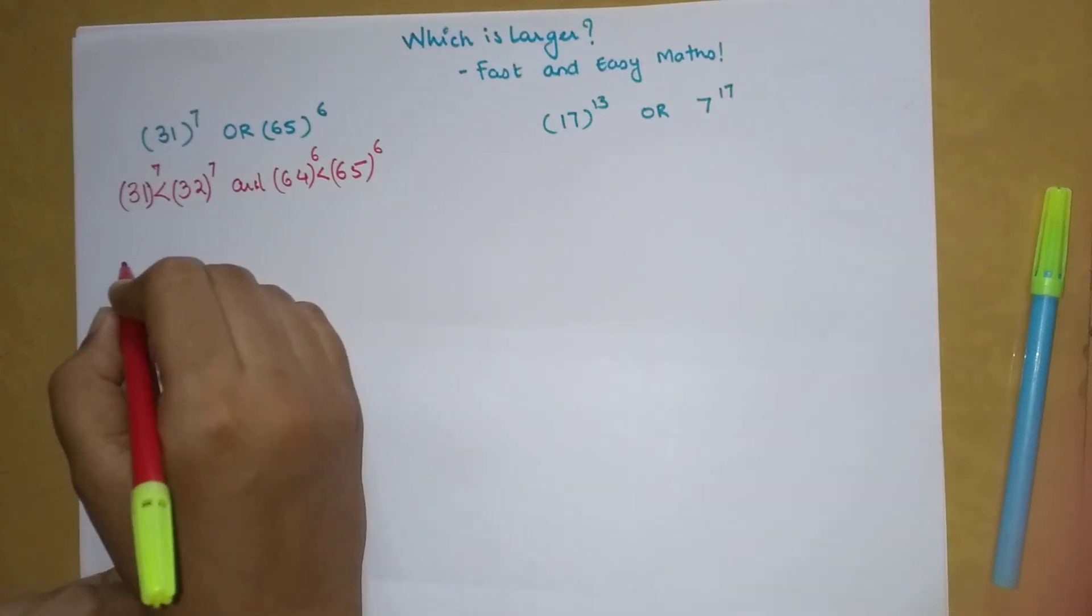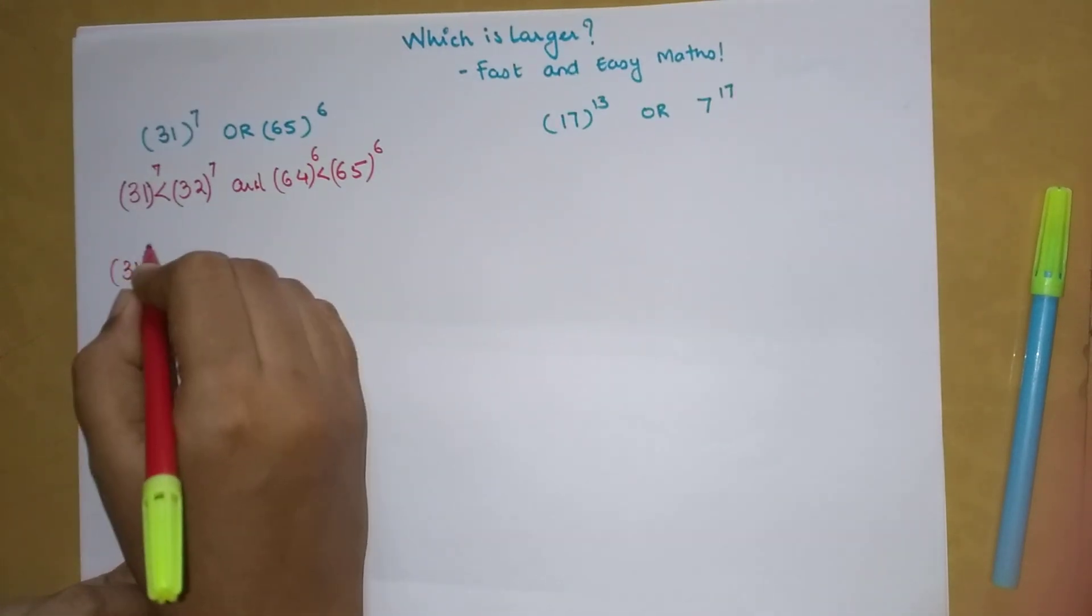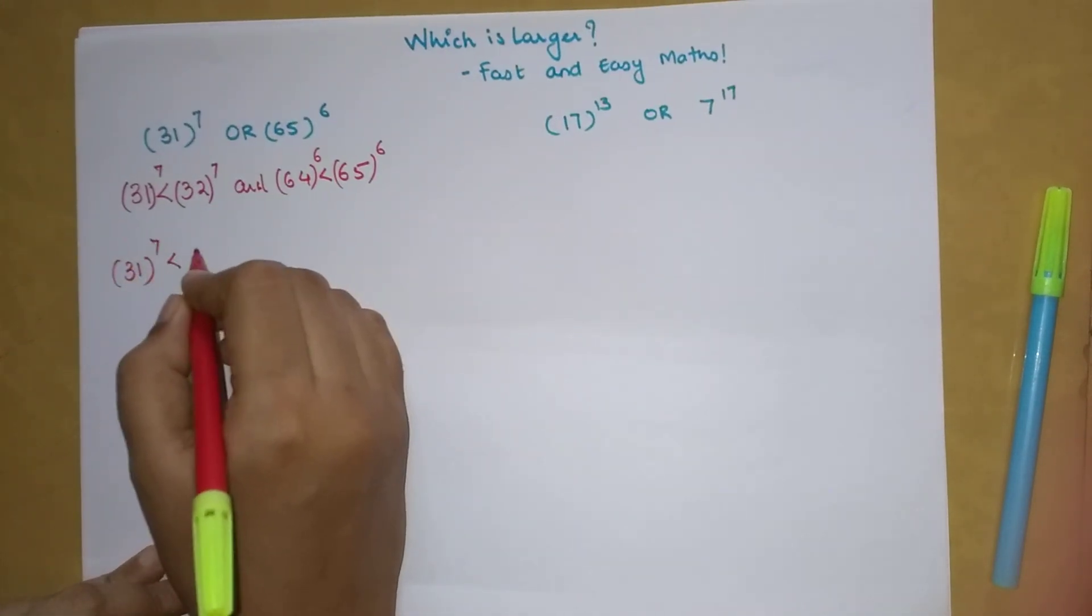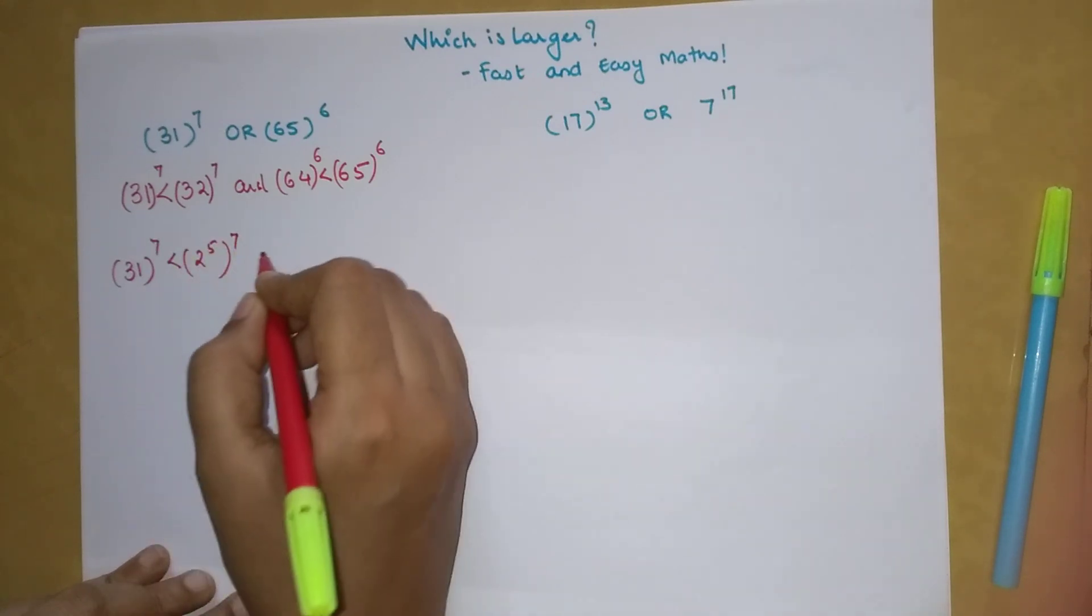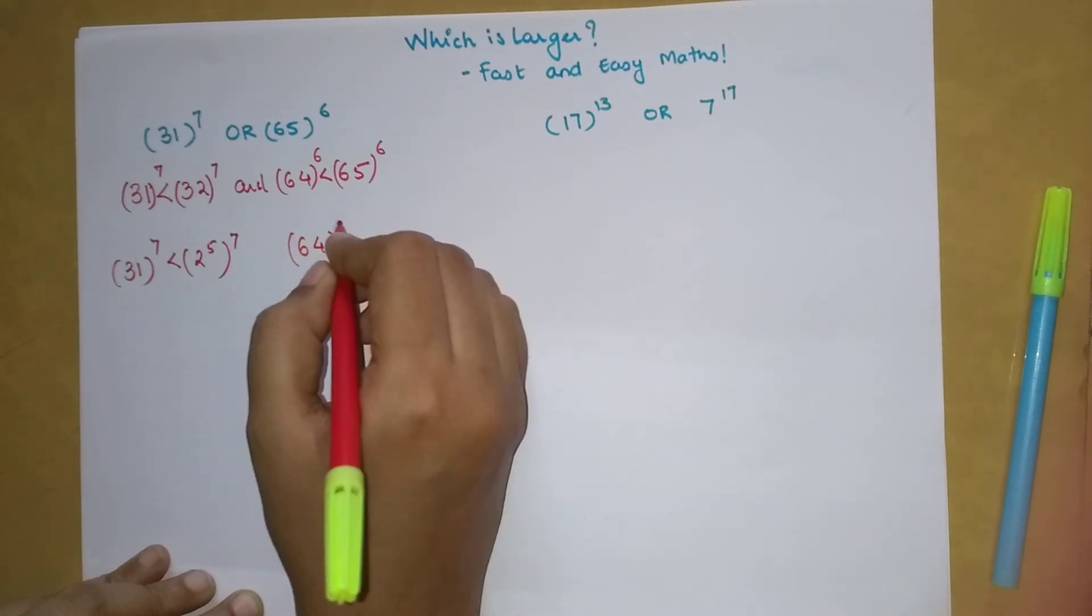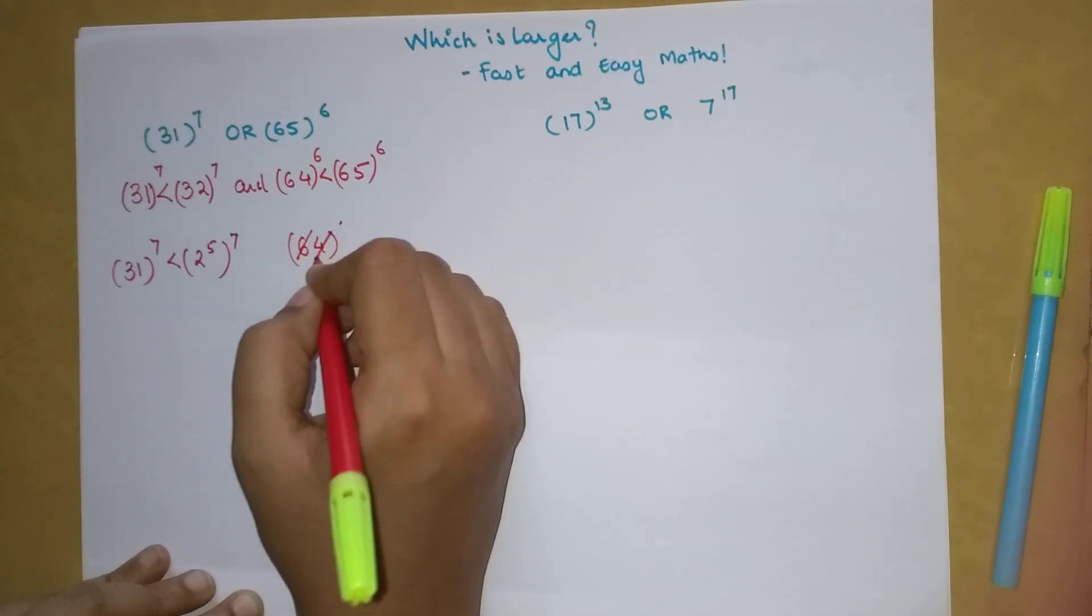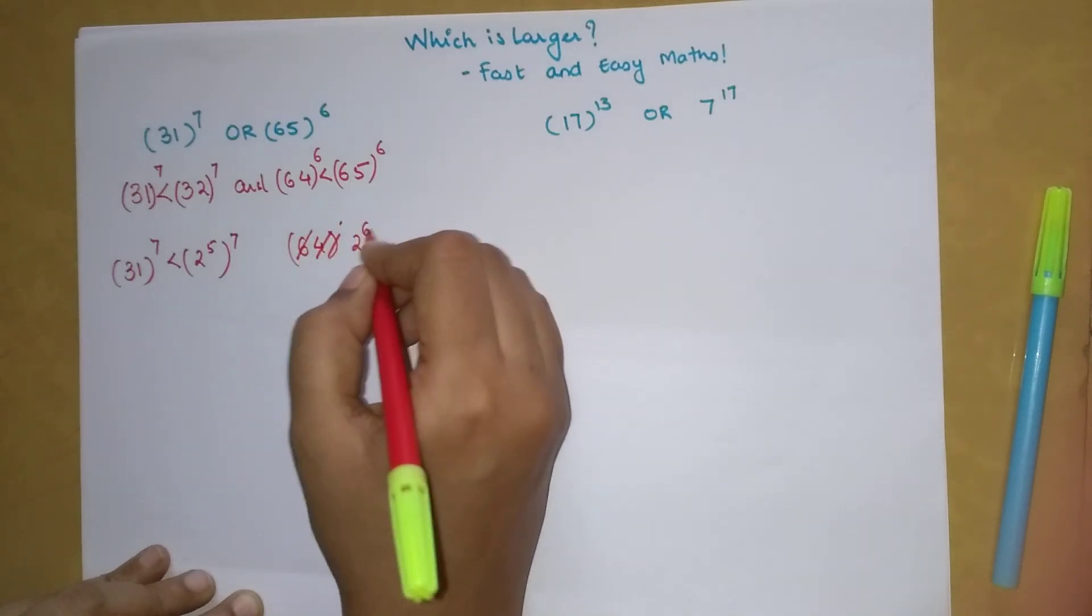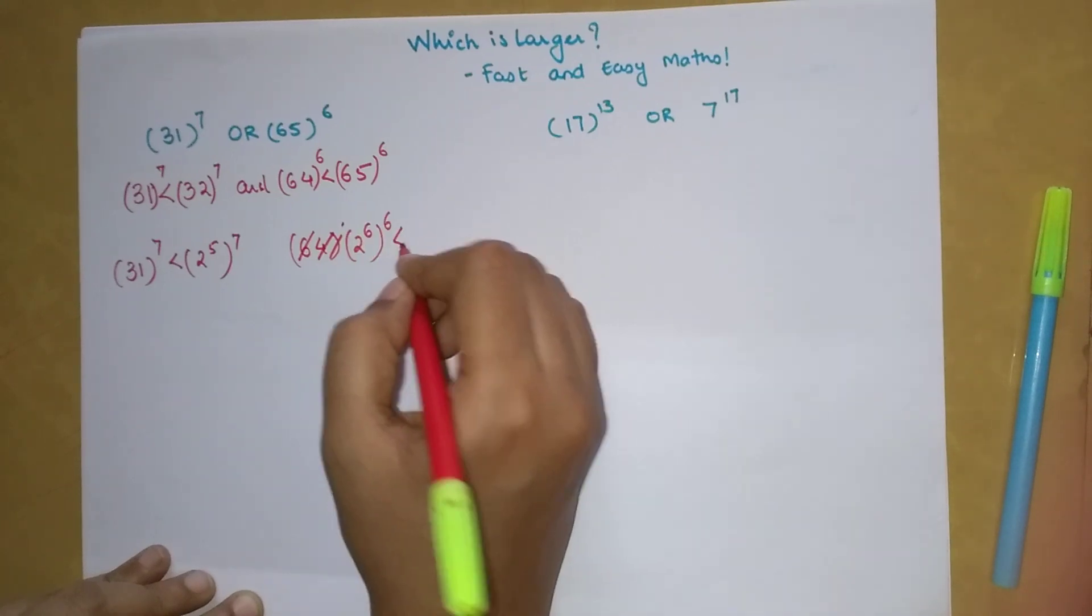Over here now, I'm going to write 31 as it is, and this can be written as 2 raised to 5 the whole raised to 7. Here we have 64 which can be written as 2 raised to 6 the whole raised to 6, which is lesser than 65 the whole raised to 6.